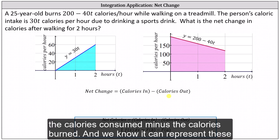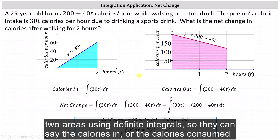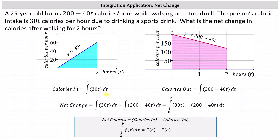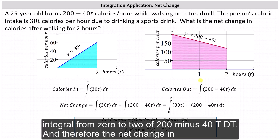We know we can represent these two areas using definite integrals. So the calories in, or the calories consumed during the two-hour workout, is equal to the definite integral from zero to two of 30T dT. And the calories out, over the two-hour workout, is equal to the definite integral from zero to two of 200 minus 40T dT.